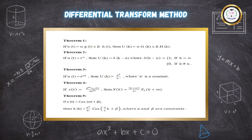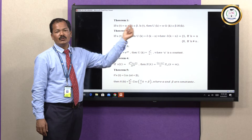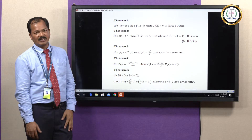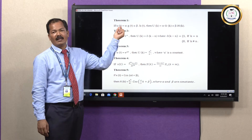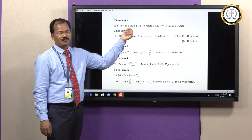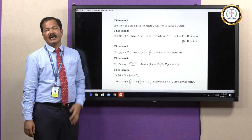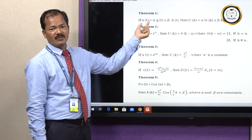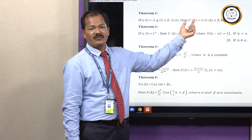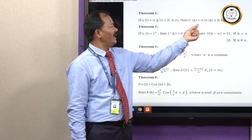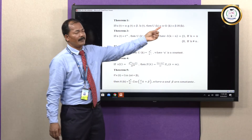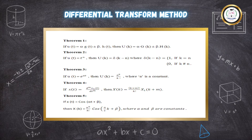Theorem 1 states: when we have two original functions, small g of t and small h of t, multiplied by non-zero constants alpha and beta, combined by arithmetic operations plus or minus, the differential transform gives capital U of k equal to alpha times capital G of k, where G of k is the transform of g of t. Similarly, the transformation of h of t is equal to capital H of k.